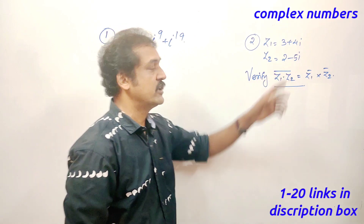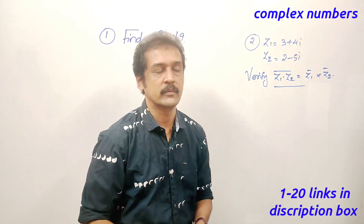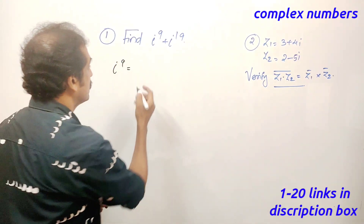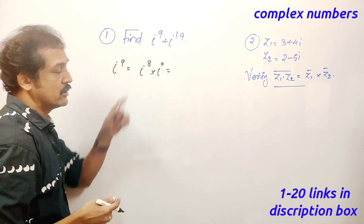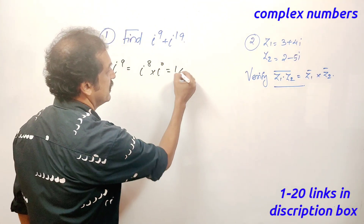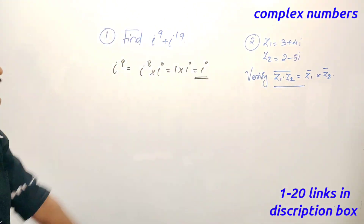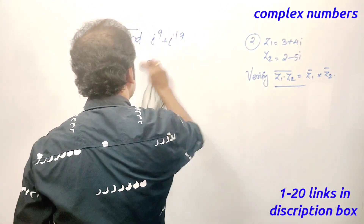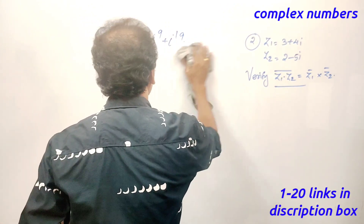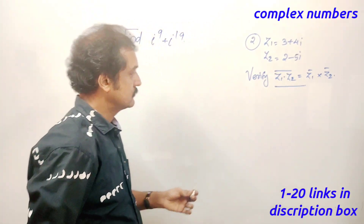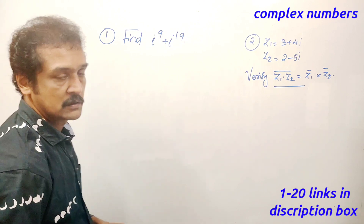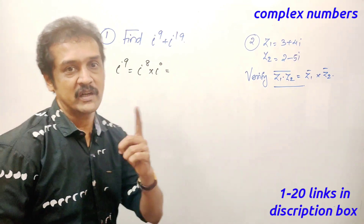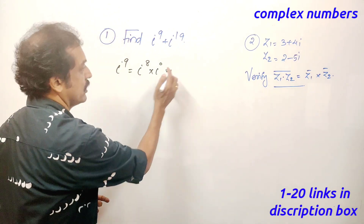Find i raised to 9 plus i raised to 19. Let's complete these two questions. i raised to 9 equals i raised to 8 into i. The value of i raised to 8 is 1 because 8 is a multiple of 4. Therefore i raised to 9 equals 1 into i, which is i.